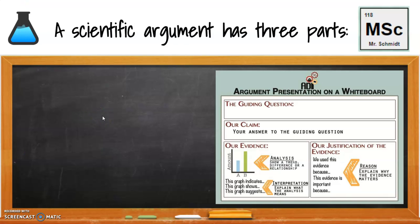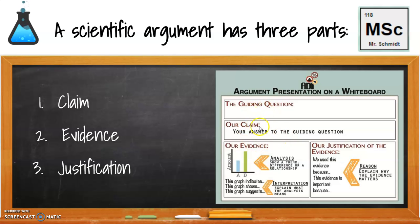So a scientific argument really has three parts to it. There's the claim, there's the evidence, and there's the reasoning, or in our case, we're going to call it the justification. And you guys maybe have seen this set up over here on this picture before, where you have your question here, the claim, some of the evidence, and we'll get into some of this here in a minute.